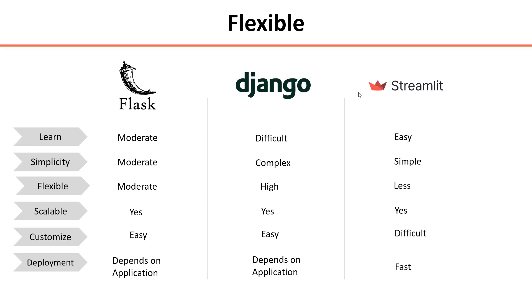From a deployment point of view, it is incredibly fast to deploy our application in Streamlit, whereas the complexity and time taken to deploy in Django and Flask totally depends upon the application.